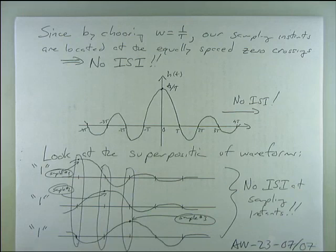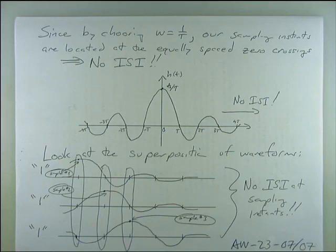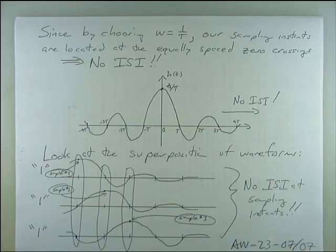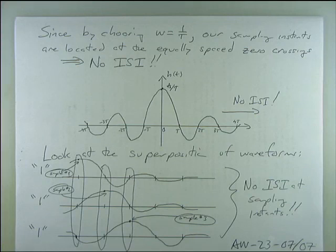This is a beautiful filter, but it's not realizable: sinc pulses stretch from −∞ to +∞, and if you truncate them they lose their perfect zero crossings and ISI reappears. However, there is another equally powerful pulse shape that achieves zero ISI and is practically realizable — one that many people use without realizing it. That concludes lecture 23.